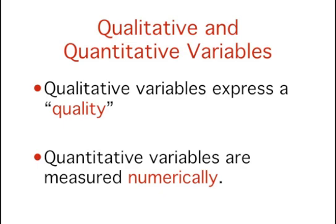Variables can be either qualitative or quantitative. Qualitative variables are those that express a qualitative attribute such as hair color, eye color, religion, favorite movie, gender, and so on. The values of a qualitative variable do not imply any kind of ordering. Values of the variable religion differ qualitatively — no ordering of religions is implied.